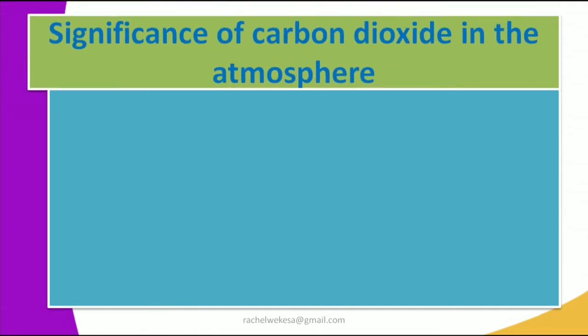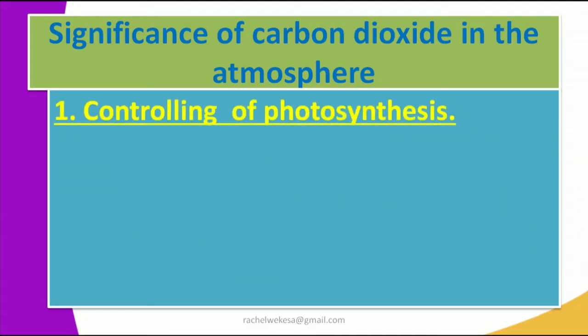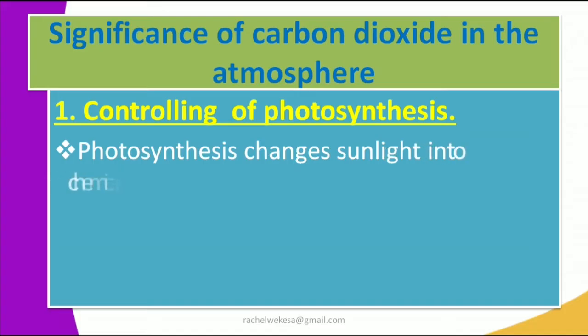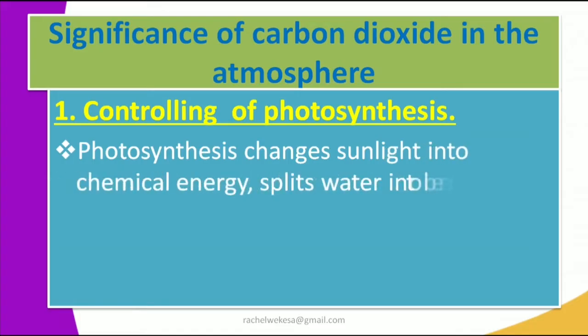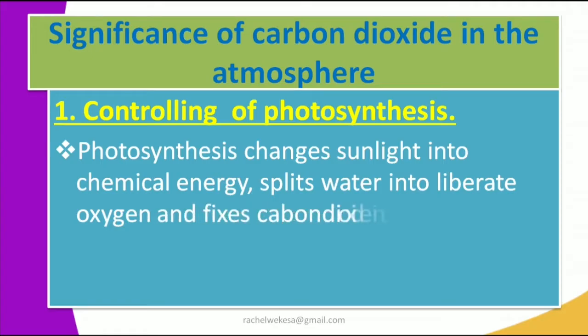Let's look at the significance of carbon dioxide in the atmosphere. The first significance is the controlling of photosynthesis — a process you have learned about in primary school and biology. For geography, photosynthesis changes sunlight into chemical energy, then splits water to liberate oxygen and fixes carbon dioxide into sugars. Photosynthesis is the process that enables plants to make their own food using carbon dioxide.